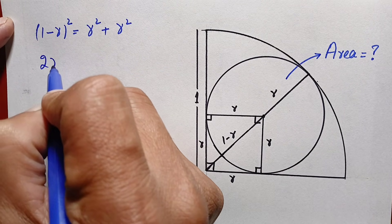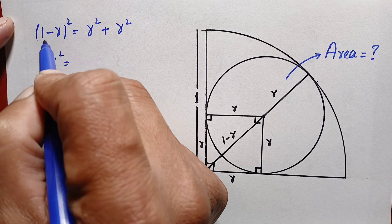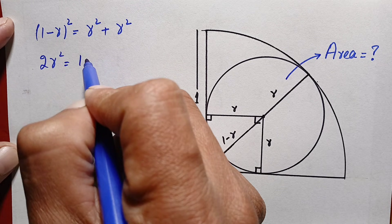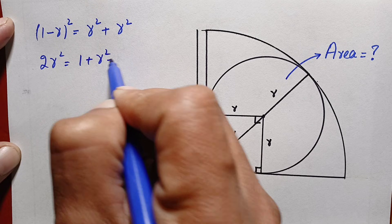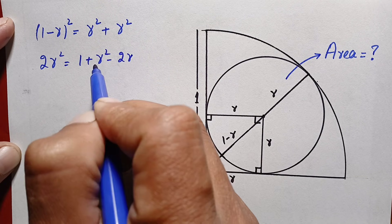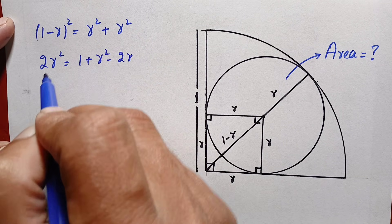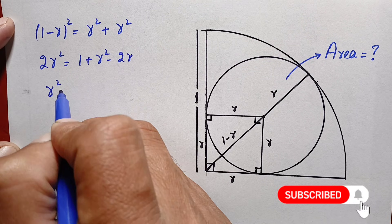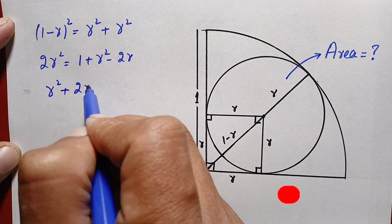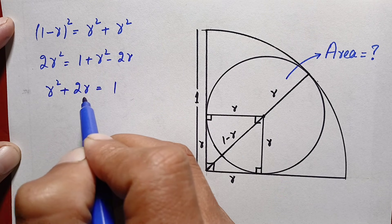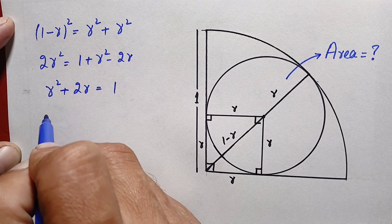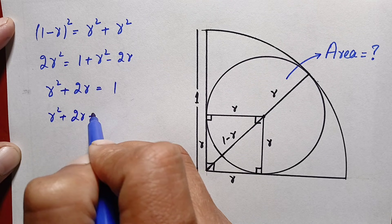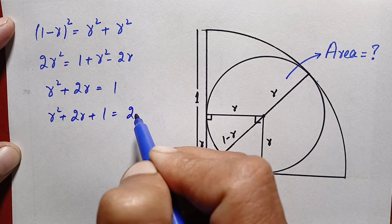Here r² + r² is simply 2r². We expand (1 − r)² using the identity (a − b)² = a² − 2ab + b², giving 1 − 2r + r². Taking the r² to the left hand side: 2r² − r² gives r², and we also bring over the −2r term, so we have r² + 2r = 1. Adding 1 to both sides: r² + 2r + 1 = 2.